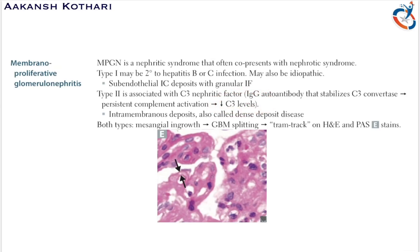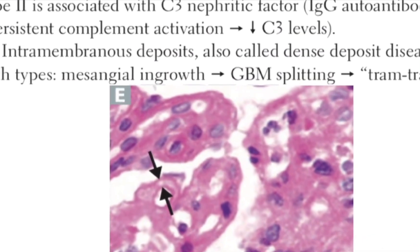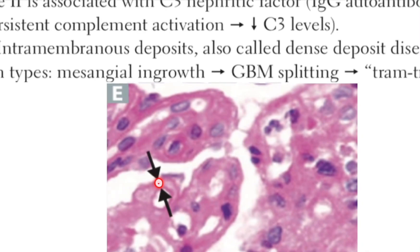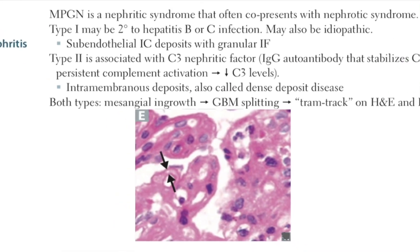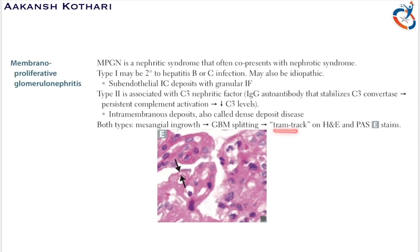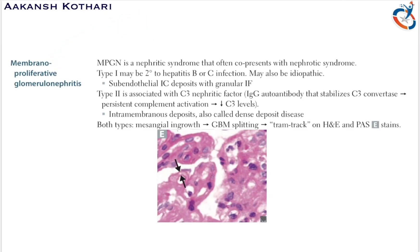In both types of membranoproliferative glomerulonephritis, mesangial ingrowth leads to glomerular basement membrane splitting. This produces a characteristic tram-track appearance visible on H&E or PAS stains. Membranoproliferative glomerulonephritis is poorly responsive to steroids and hence can progress to chronic kidney disease due to its limited response to steroid therapy.